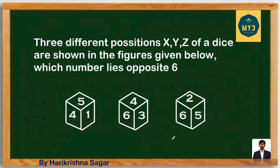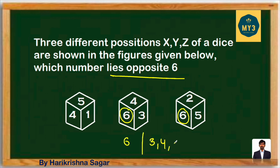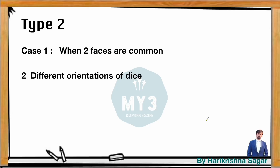Now look at another question: three different positions of a die using X, Y, Z are given — find the face opposite to six. In dice one we don't have six, but in dice two and dice three we do. Adjacent to six in dice two: three and four. Adjacent to six in dice three: two and five. The number not present is one, so opposite to six is one. Like that we can solve Type 1 questions.